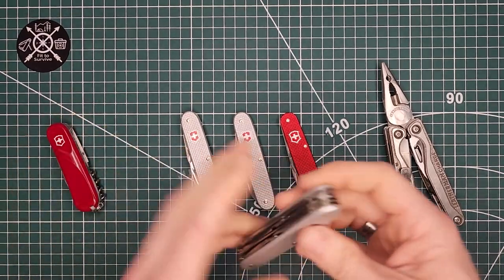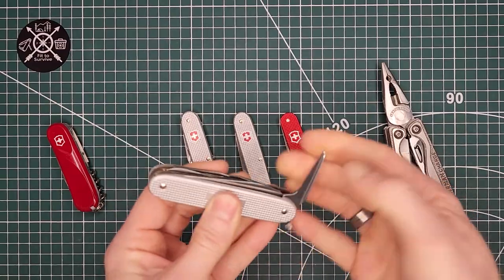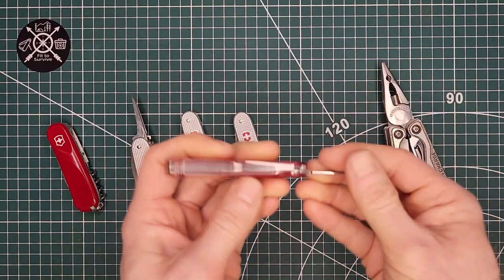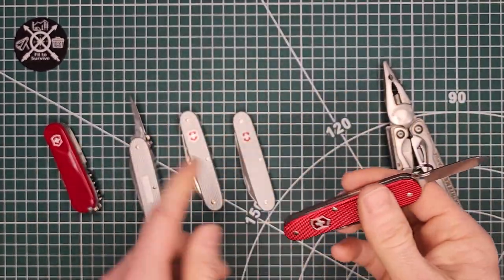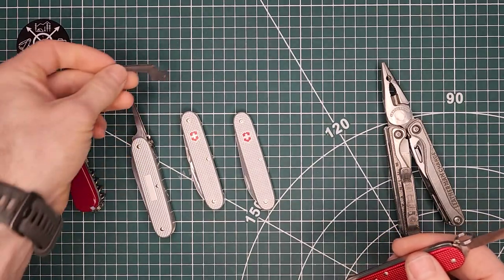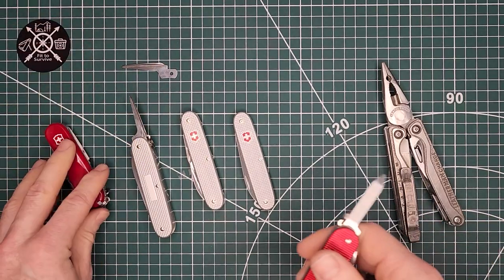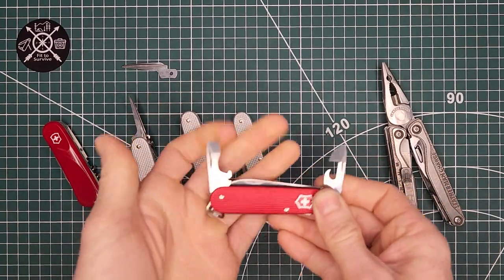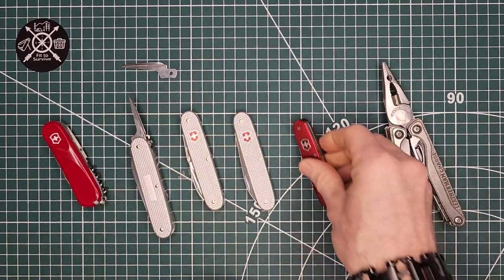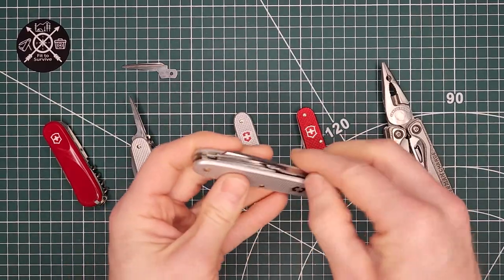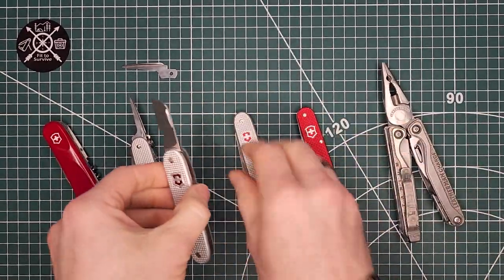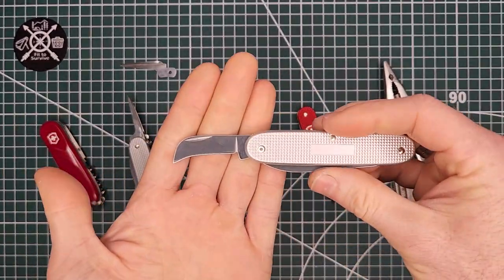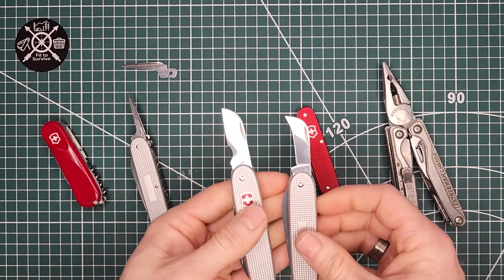Another thing that he asked for is he wants the reamer. On this cadet we're going to be removing the nail file and replacing that with the reamer. I have a loose one of those from my toolbox. He wants to keep the original blade and then replace the can and bottle openers with the electrician blade and the pruner blade from the Swiss Army too.